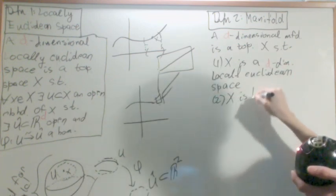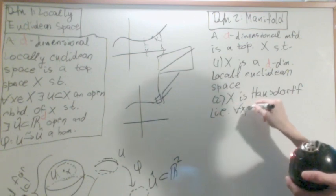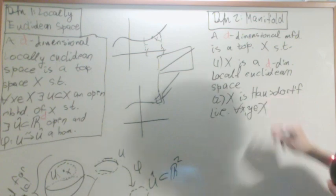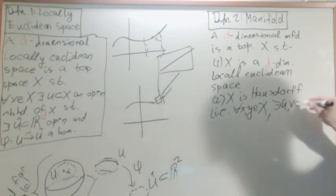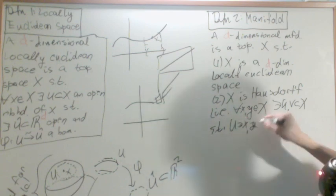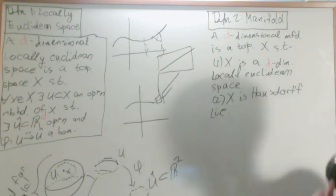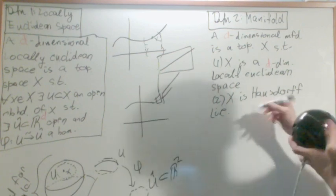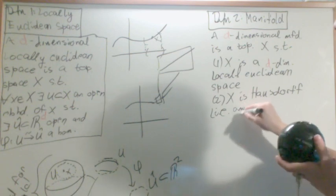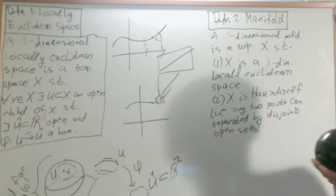And two, X is Hausdorff, which basically means that for any two elements in X, there exists U and V open subset of X such that U contains x, V contains y, and they're disjoint. Which basically means that any two points can be separated by disjoint open sets.